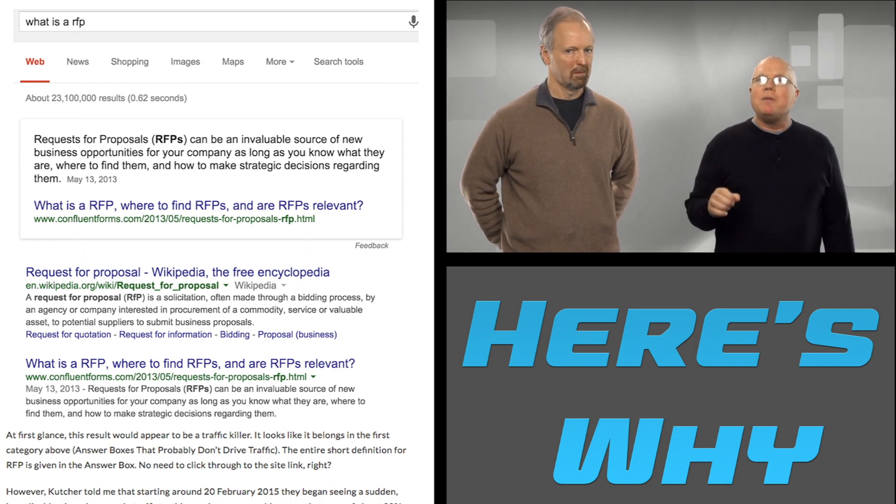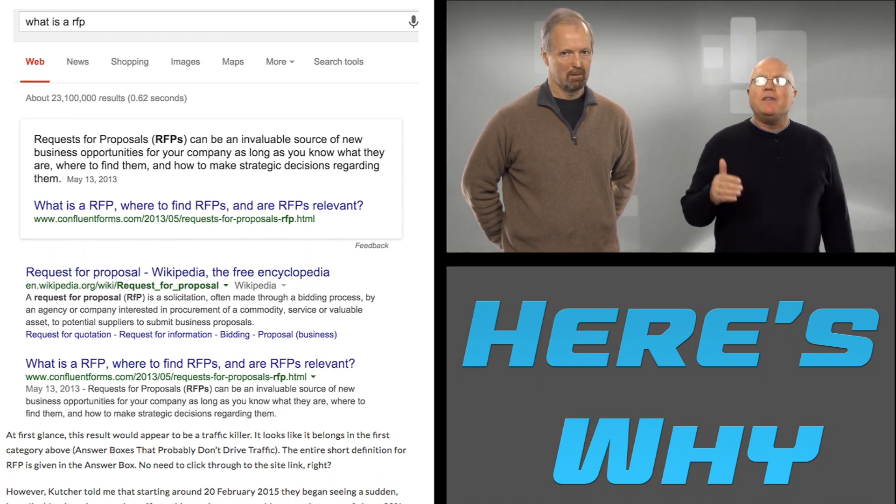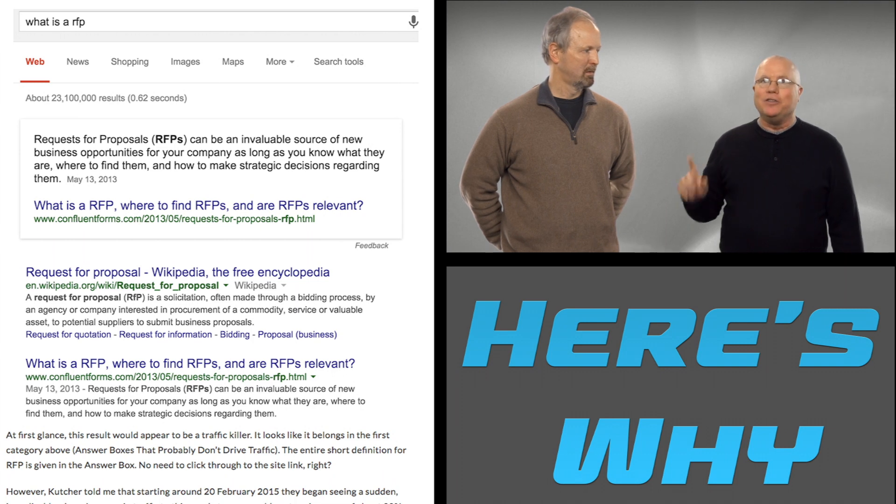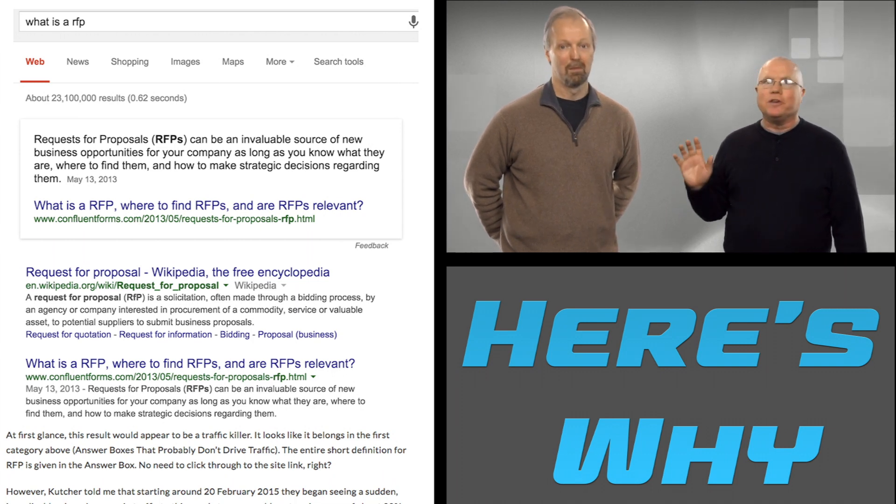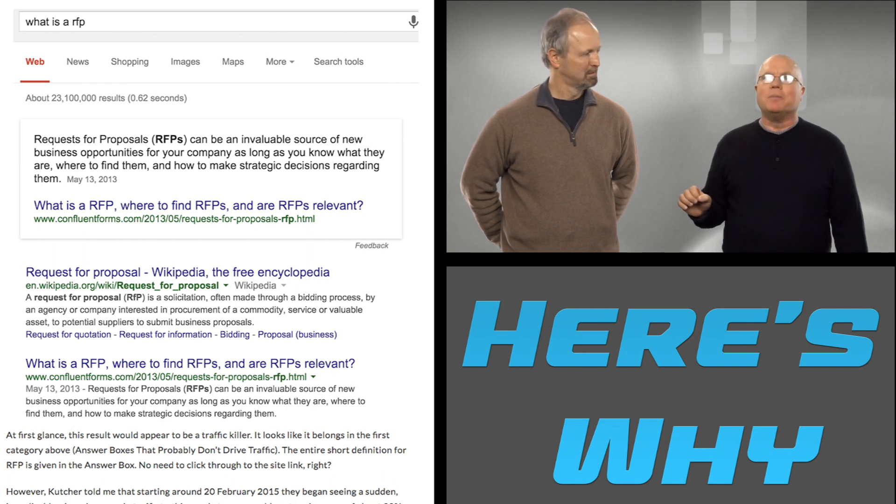When he checked the primary keyword for the post on Google, that's what is an RFP, he noticed something that hadn't been there before, a rich answer box linked to his post at the top of search. It looks like people are clicking the link in that answer box, even though it displays a complete answer to the question.